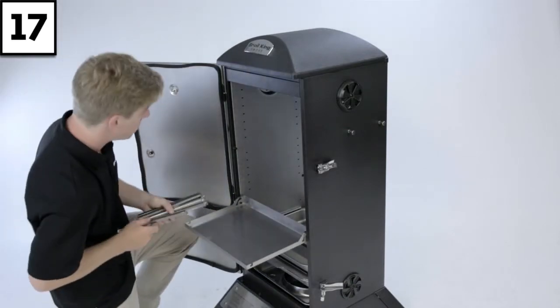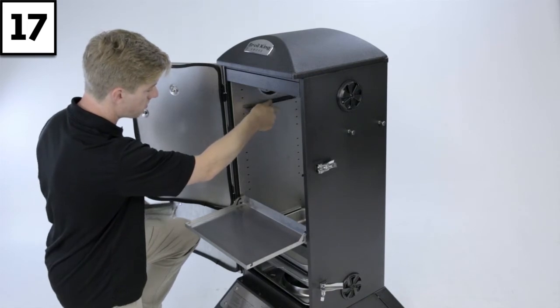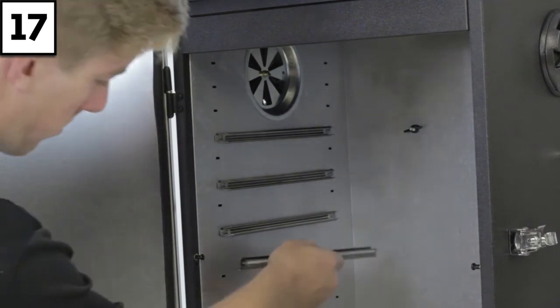Step 17: Install the remaining eight rack brackets, four on each side, for the wire racks. Now space the racks as required, based on your cooking needs.